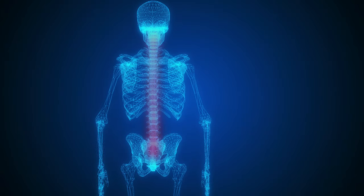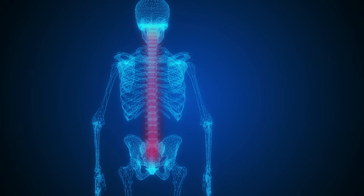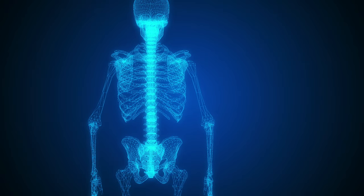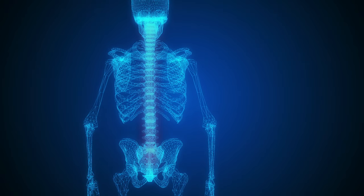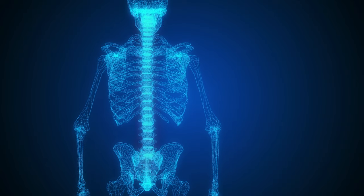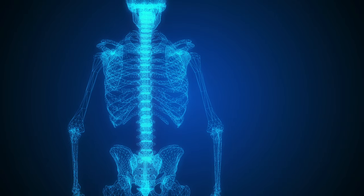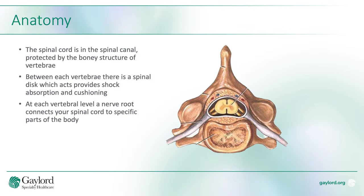The spinal cord exists in the spinal canal, which is a long tube that's in the spine. It's protected by the bony structures of the vertebrae. Between each vertebra there is a disc which acts as both a shock absorber and adds some range of motion to how the spine moves.